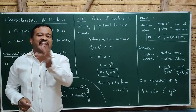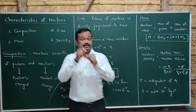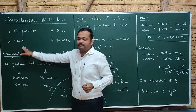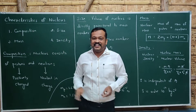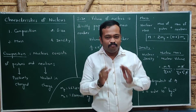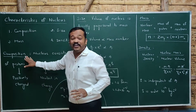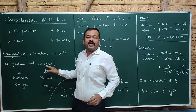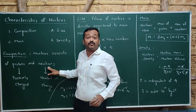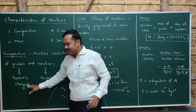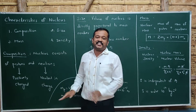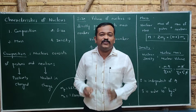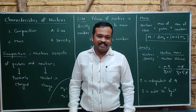Now let us move on to the characteristics of the nucleus. We will study these under composition, size, mass, and density. The first characteristic is composition: the nucleus consists of protons and neutrons. Protons are positively charged and neutrons are neutrally charged. These are the particles present inside the nucleus — that is the composition.